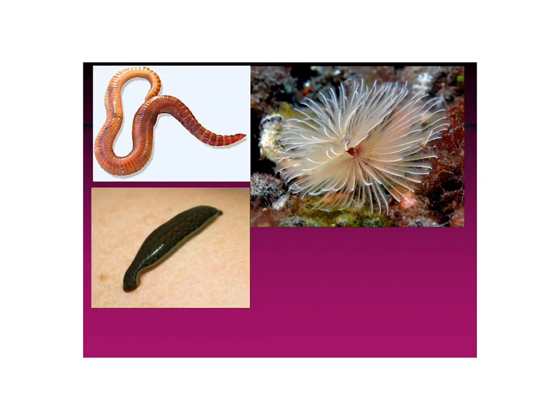Here are some examples of annelids: we have the earthworm, and this is a leech — they attach and suck your blood, they're parasites. And then this is another marine worm. Those are the first few groups of animals we're going to talk about. This is only part one, and we'll talk more about some different animals later.